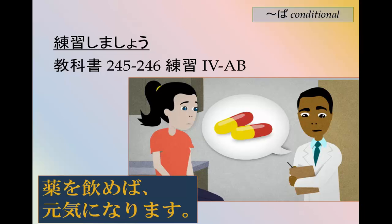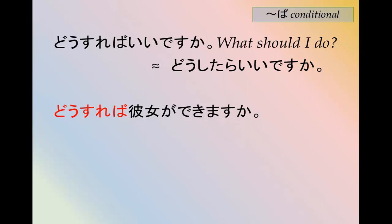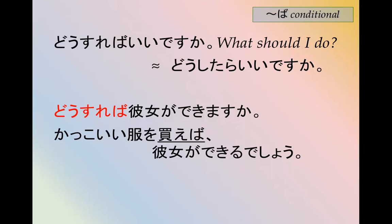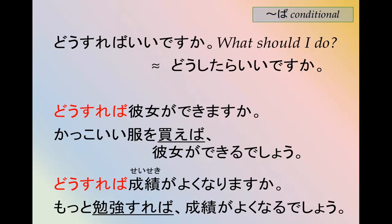Note that there are some useful question patterns with ば. どうすればいいですか — what should I do? — is the same as どうしたらいいですか. どうすれば彼女ができますか — what should I do to get a girlfriend? かっこいい服を買えば彼女ができるでしょう — if you buy stylish clothes, maybe you'll be able to get a girlfriend. どうすれば成績が良くなりますか — what should I do to improve my grades? もっと勉強すれば成績が良くなるでしょう — if you study more, your grades will probably improve.